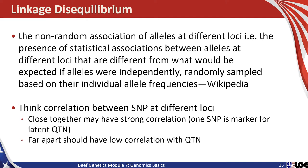You can think of the correlation between SNPs at different loci as a way to practically understand linkage disequilibrium. Loci that are close together have a strong correlation — one SNP is a marker for a latent QTN that is unknown and not observed, but still has a function expressed in the animals. If the differences in DNA sequence are far apart from the QTN, we would expect them to have a low correlation and therefore not be in linkage disequilibrium.